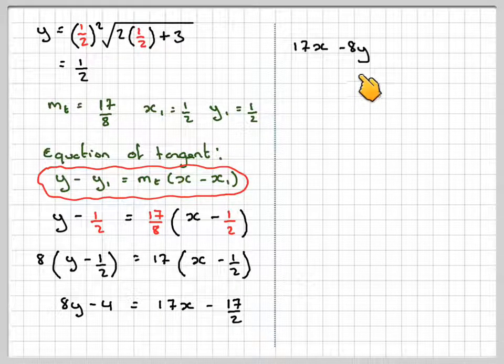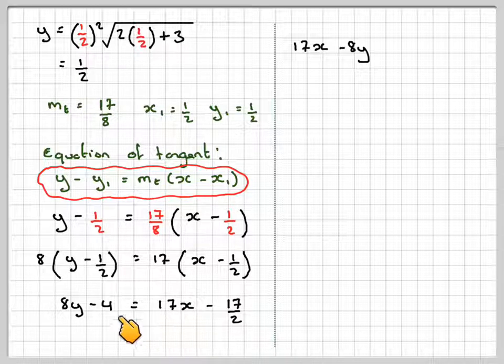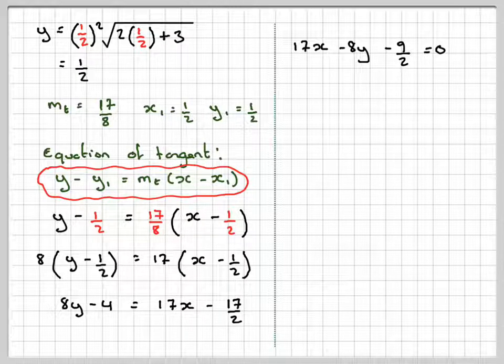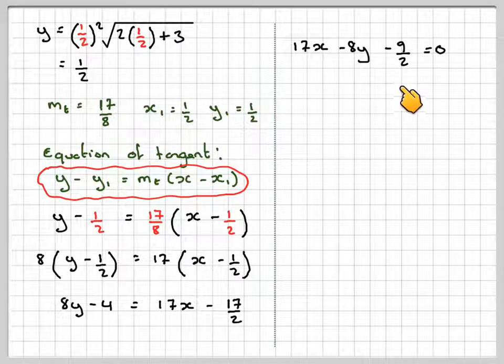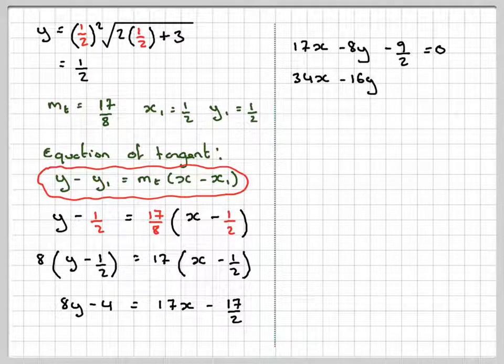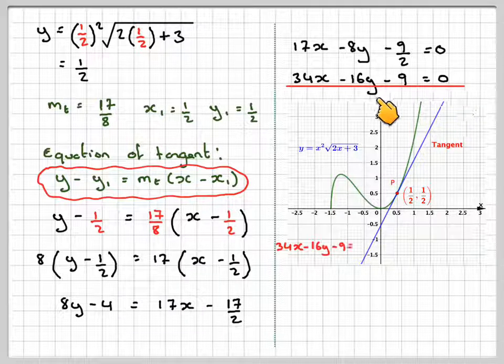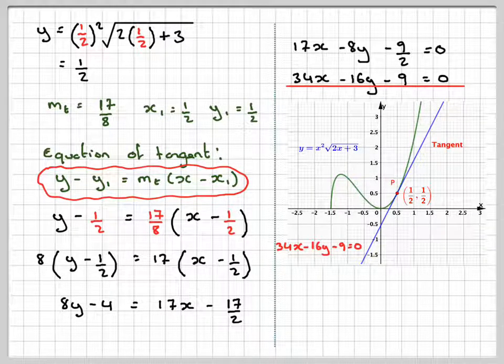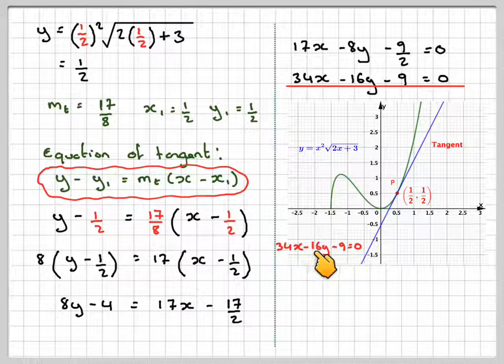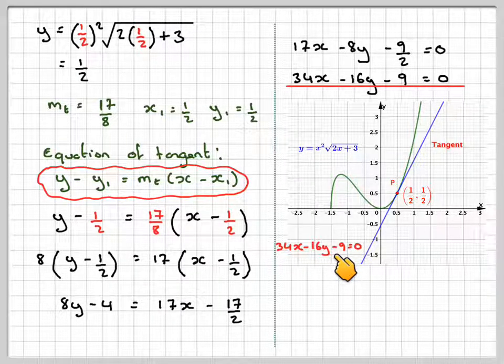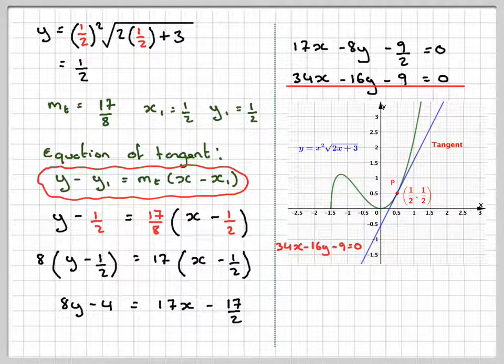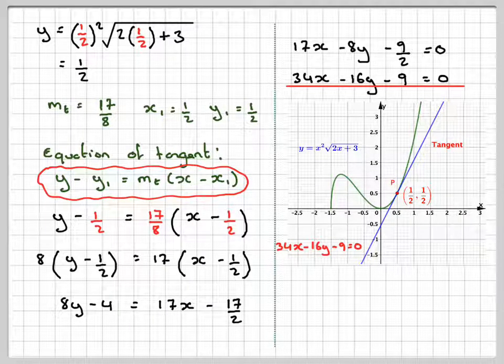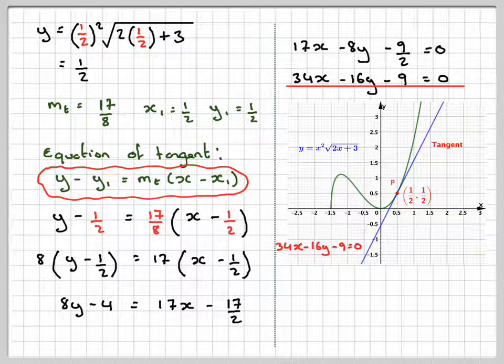So it gives me 17x minus 8y, taking the 8y over here. If we add 4, it's like adding 8 over 2, we're going to be subtracting 9 over 2. Because we don't want a fraction, just multiply the whole thing by 2. We get 34x minus 16y minus 9 equals 0 is the equation of the tangent, which means the equation of this line is 34x minus 16y minus 9 equals 0. This has been a video to show you how to find the equation of a tangent using the product rule. I hope you've understood and I thank you very much for watching.